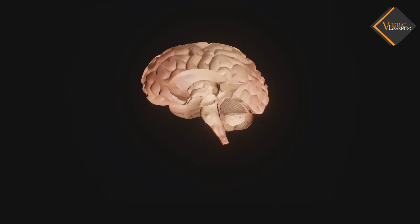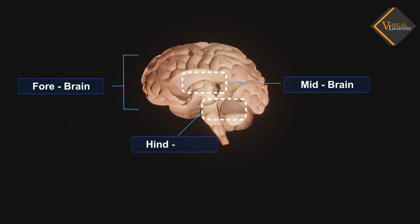The brain has three such major parts or regions, namely the forebrain, midbrain, and hindbrain. The forebrain is the main thinking part of the brain. It has regions which receive sensory impulses from various receptors. Separate areas of the forebrain are specialized for hearing, smell, sight, and so on.